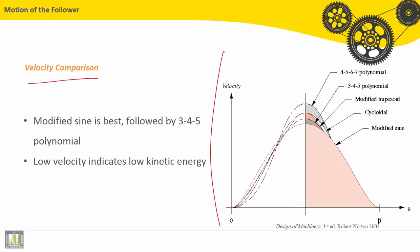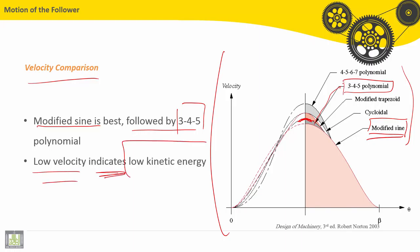Let's see now velocity comparison. On this graph we can find many types of velocity functions. The modified sine is the best one, followed by the 3-4-5 polynomial. Low velocity indicates low kinetic energy.